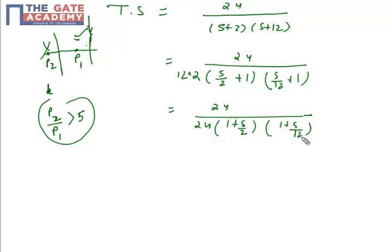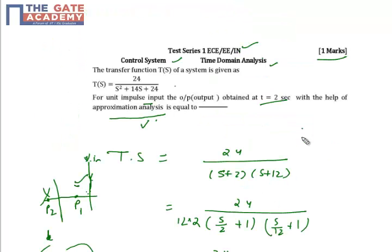By stability criteria, we know that the effect of the pole on the system is greater as it's nearer to the imaginary axis. Here we have two poles: one at -2 and one at -12. And 12 divided by 2 is 6, which is greater than 5.